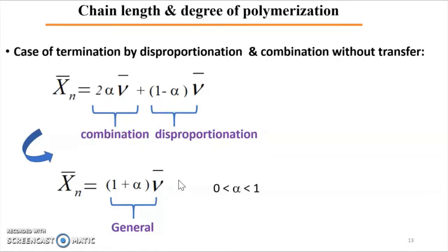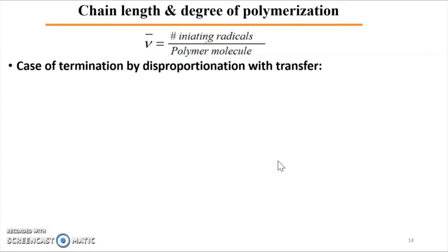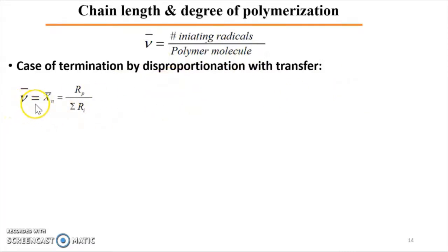Here alpha is between zero and one. When alpha equals zero, we have pure disproportionation and Xn = nu. When alpha equals one, we have pure termination by combination. For all values between zero and one, we have a mixture of termination by combination and disproportionation. Now, to determine the chain length correlated with the degree of polymerization in the case of termination by disproportionation with transfer, the kinetic chain length and Xn equal the rate of propagation divided by all kinds of initiation.